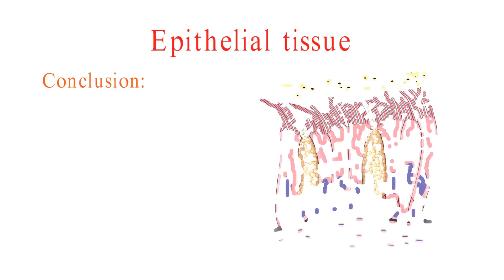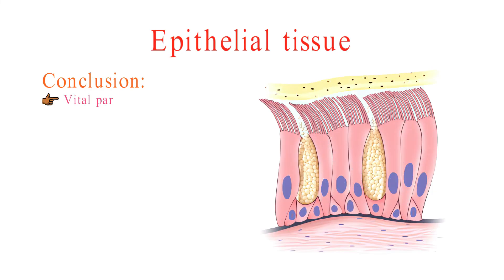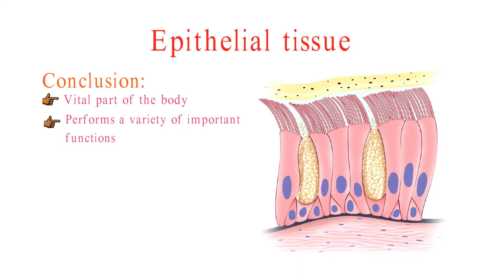Epithelial tissue is a vital part of the body. It performs a variety of important functions, including protection, secretion, absorption, excretion, filtration, and sensory reception. Epithelial tissue is found all over the body, and its type and location vary depending on its function.